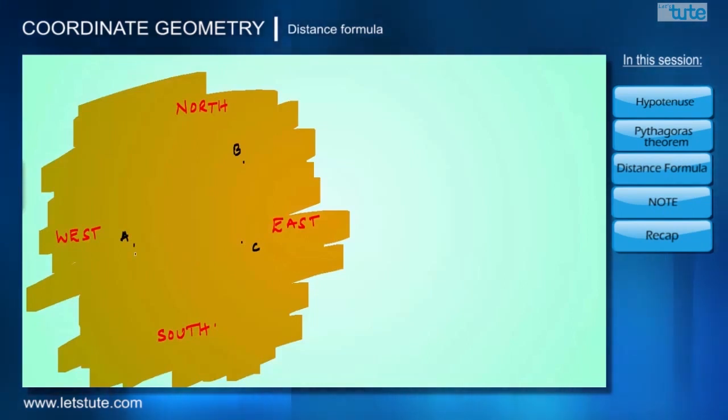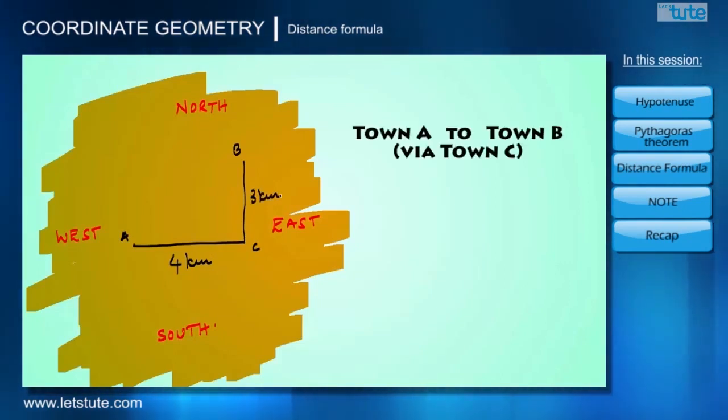This town C is at four kilometers in the east direction of town A and three kilometers in the south direction of town B. That means if anybody wants to go to town B from town A via town C, they have to travel a total of seven kilometers.